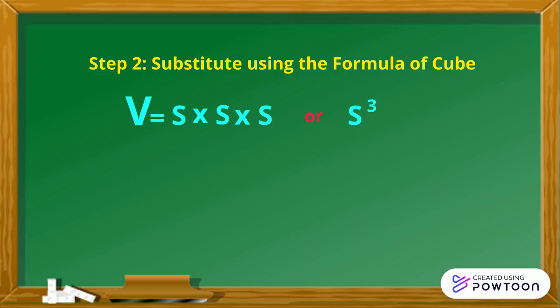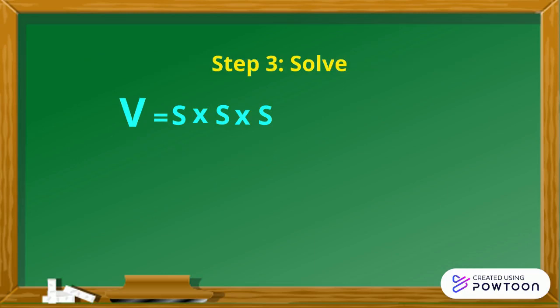And that is, volume is equal to 3 times 3 times 3. This will give us 9. Therefore, 9 times 3 will give us 27.